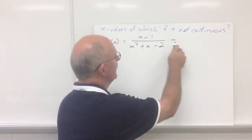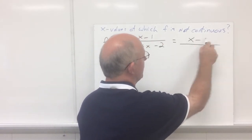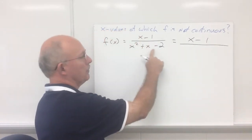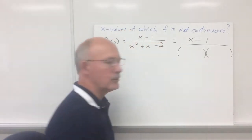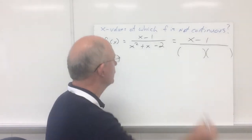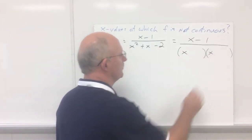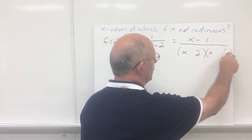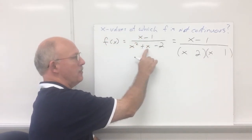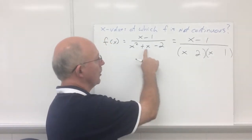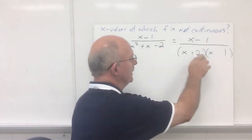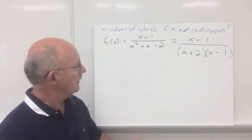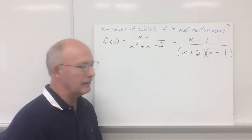Let's take a look at the factorization of this rational expression. x minus 1 won't factor, so we're just going to bring the x minus 1 on over. Now let's factor x squared plus x minus 2 — this is just a simple trinomial. It should factor as two binomial factors: x squared will factor as x times x. The 2 will only factor as 2 times 1. In a simple trinomial like this, the middle term tells you the sign of the largest number. The middle term is positive, so the 2 would have to be plus and the 1 would have to be minus. So we've got the function in factored form.